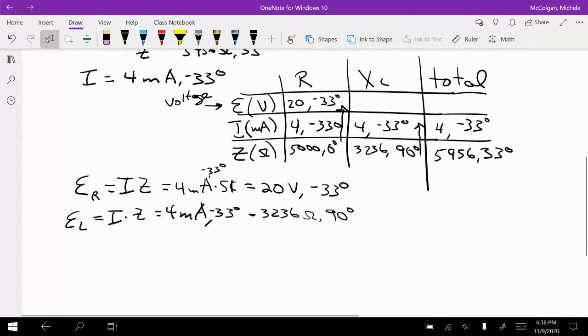So when you multiply these numbers through, you're just adding the angles. So I get this is going to equal 13 volts, and when I add 90 and negative 33, I get positive 57 degrees. So this is going to be 13 and 57 degrees.